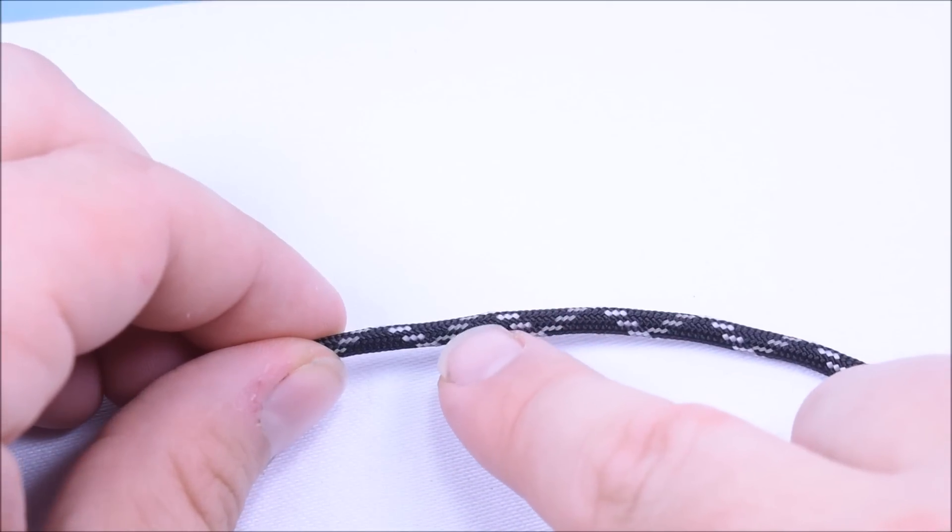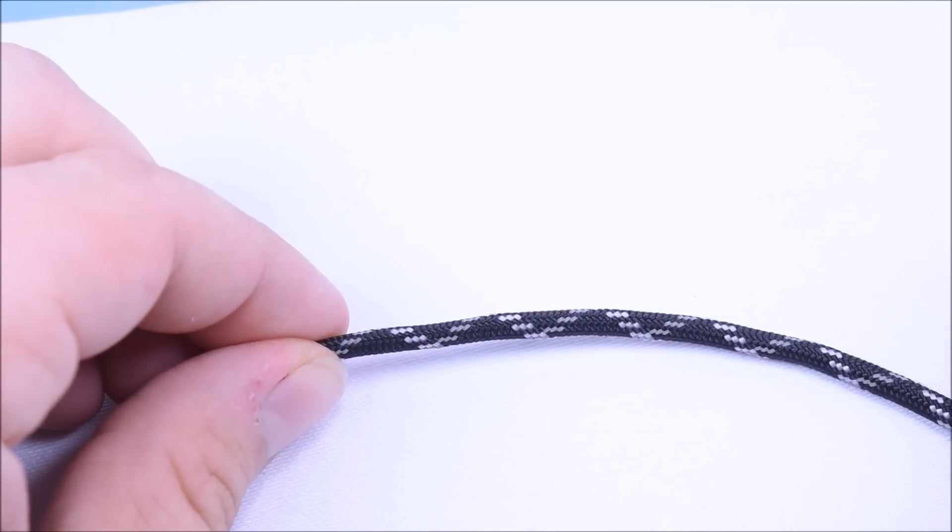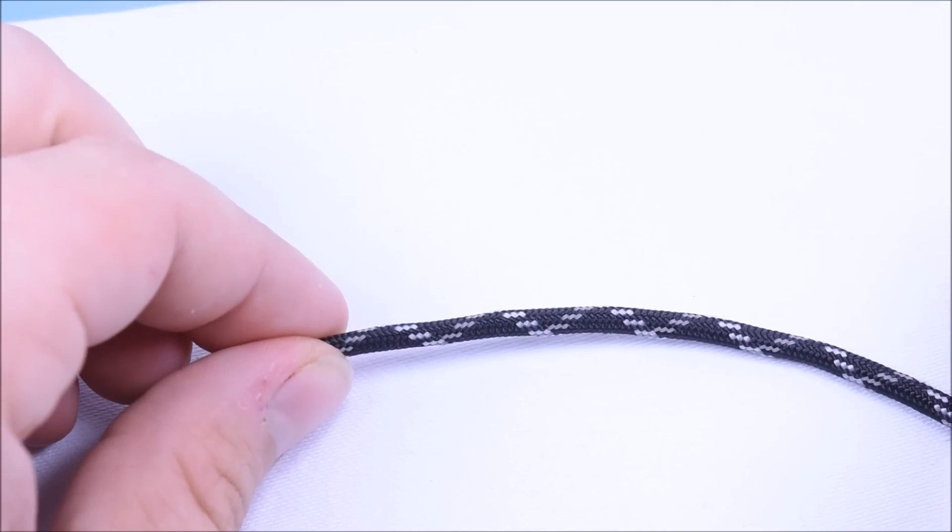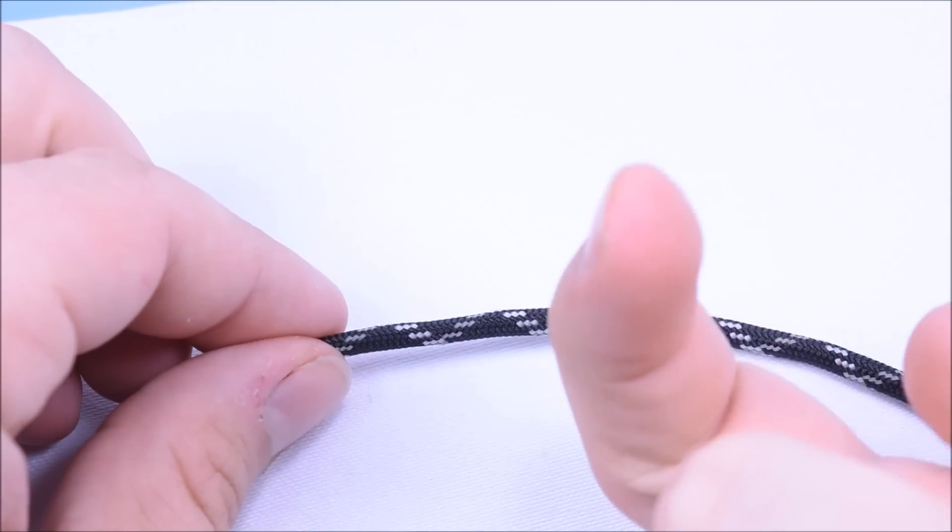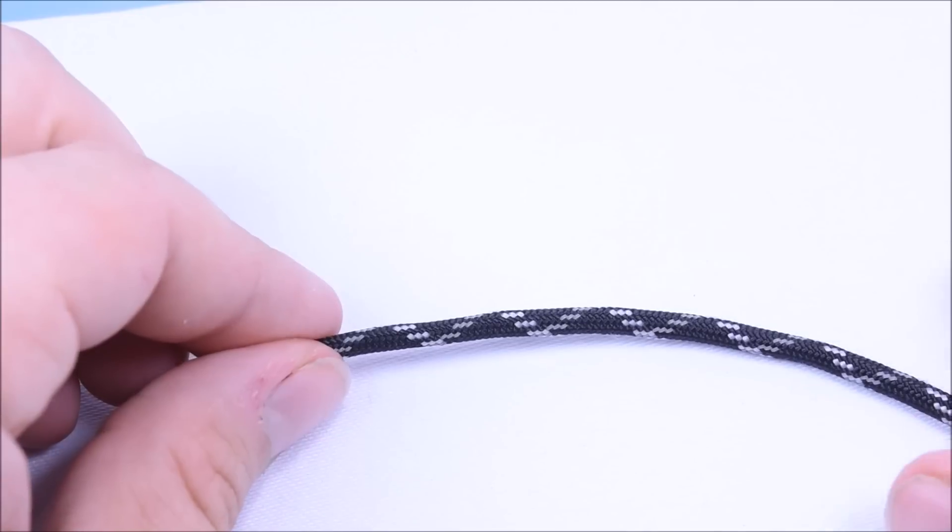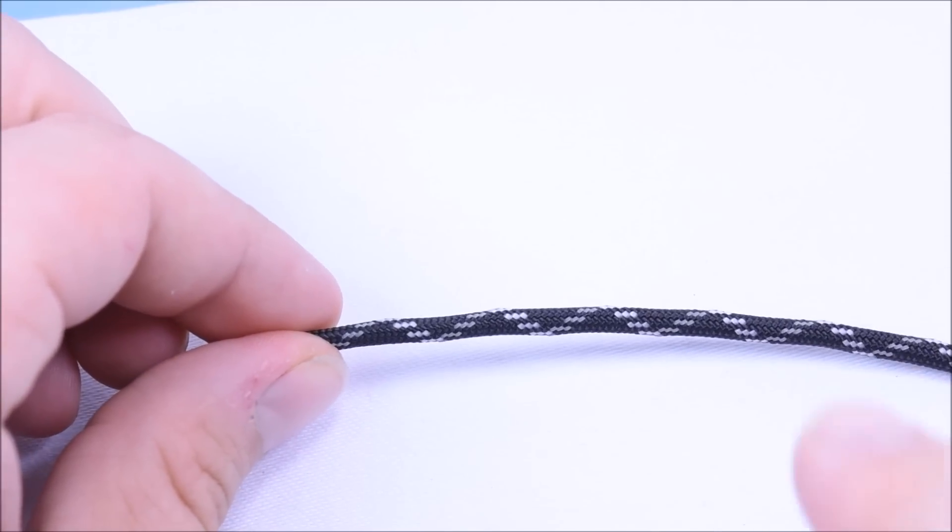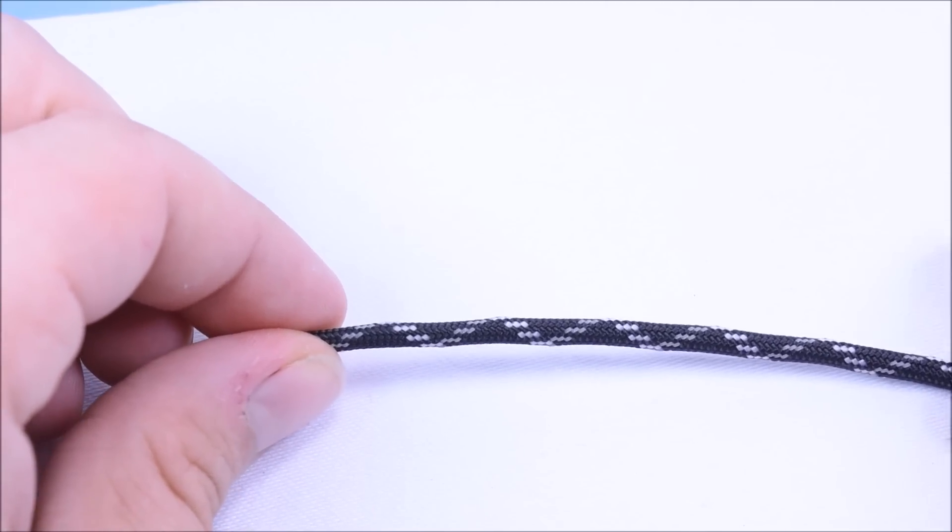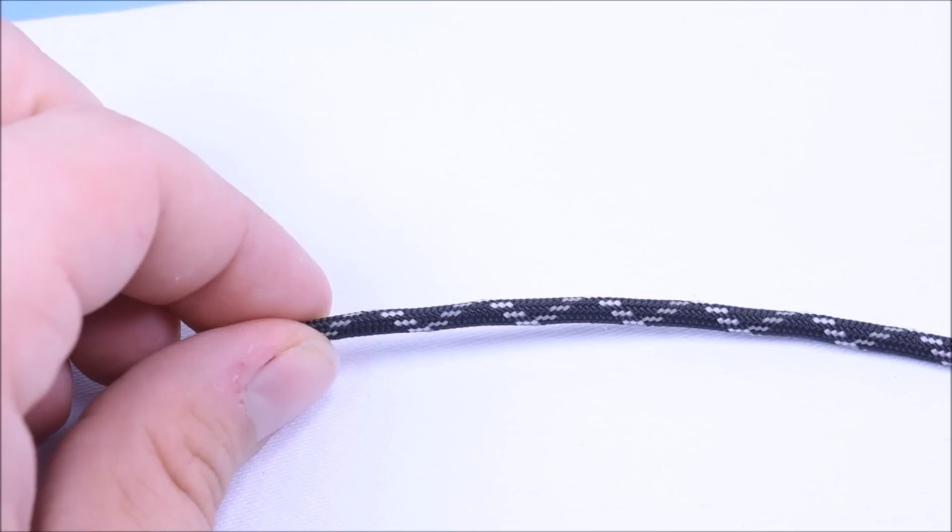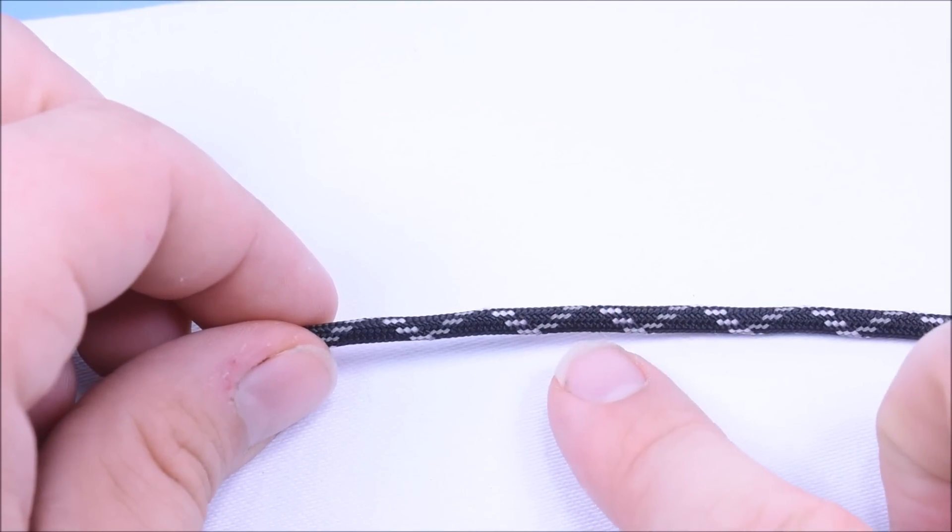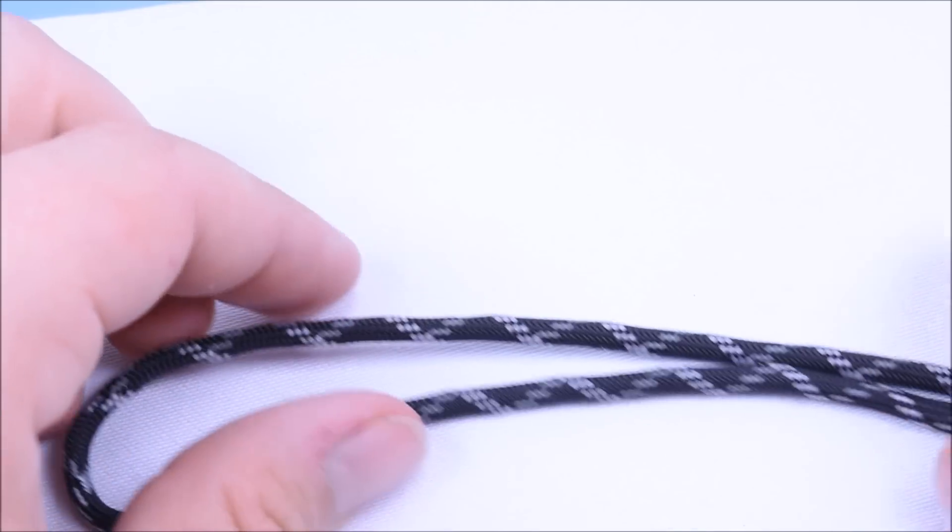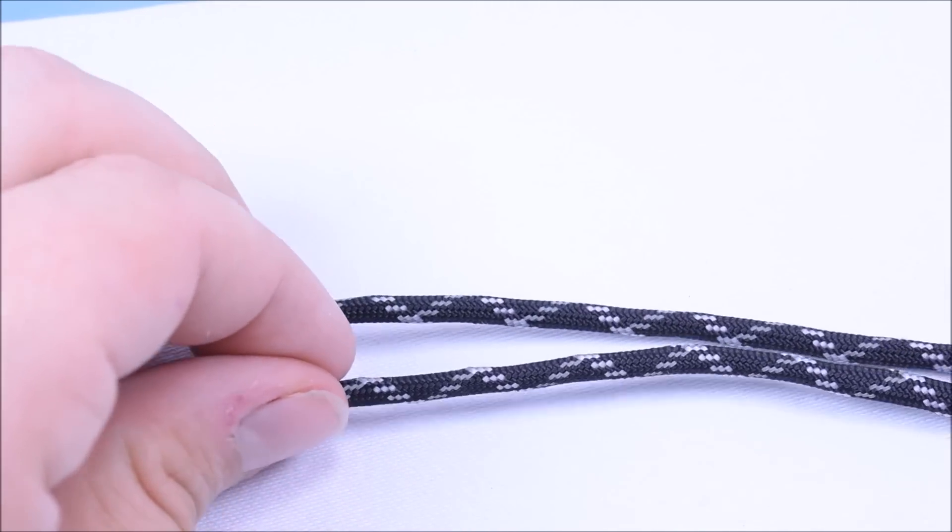The other strands here, these more charcoal looking ones, those are going to be your tracer strands. So basically what this is, is if light comes down and hits it, that light is going to bounce exactly the same direction it came from. So if you hit it with a flashlight, it's going to be reflective. Car headlight hits it, it's going to come back to the driver. So it's highly reflective. It's the same material that you find in running shoes. Now the other cool thing about this cord,